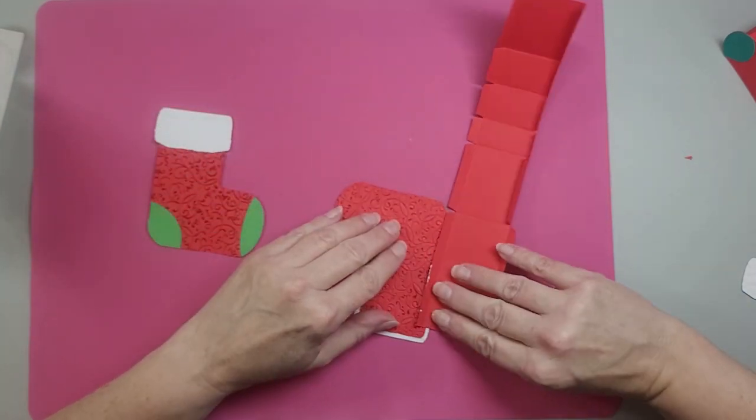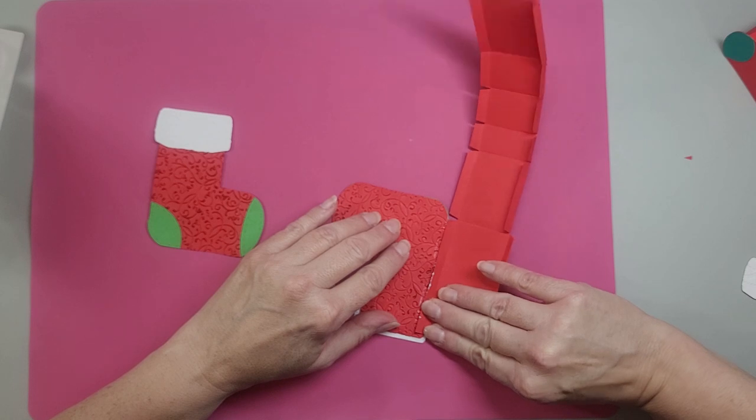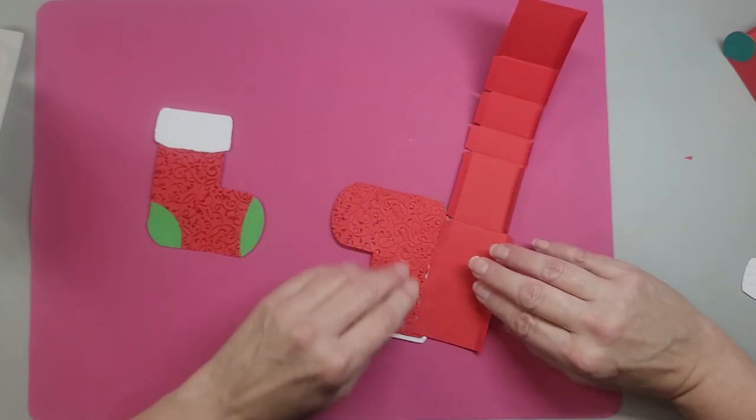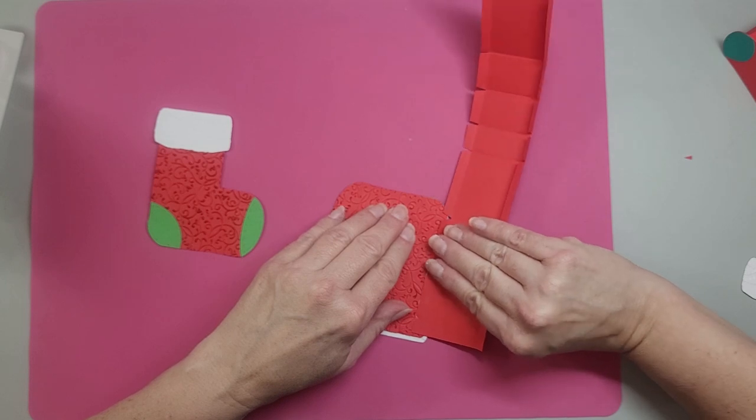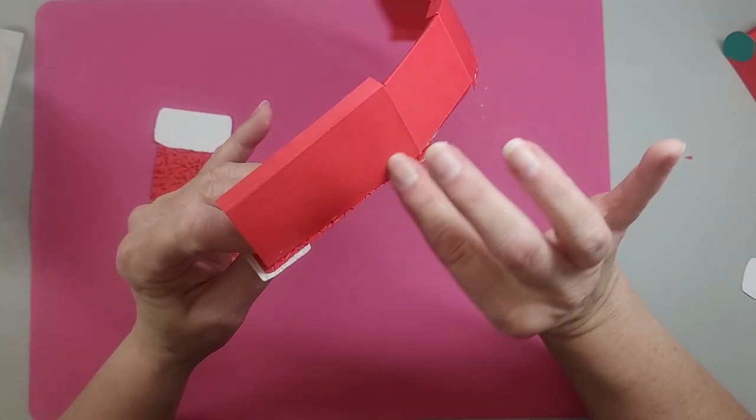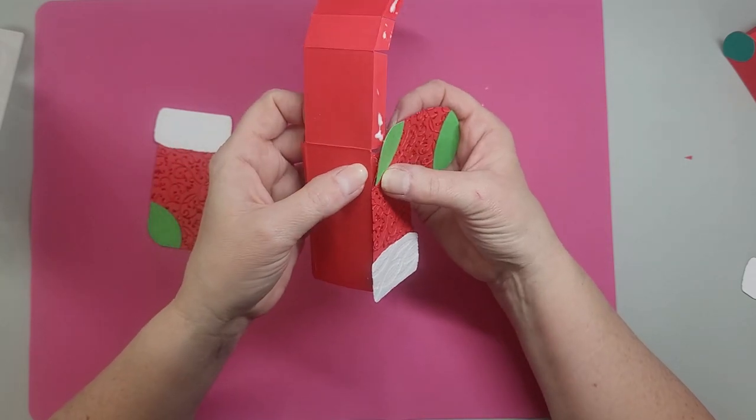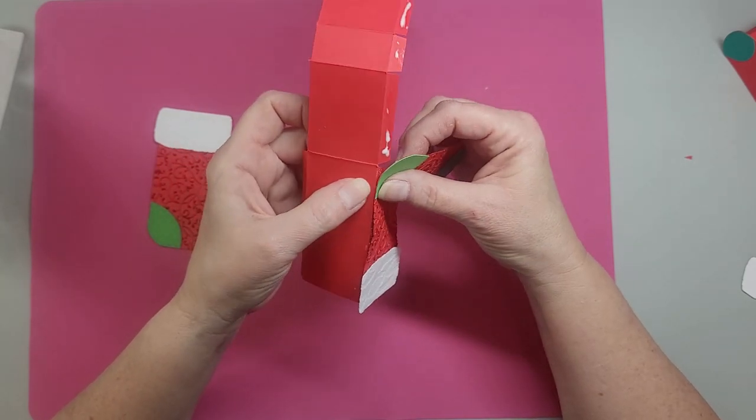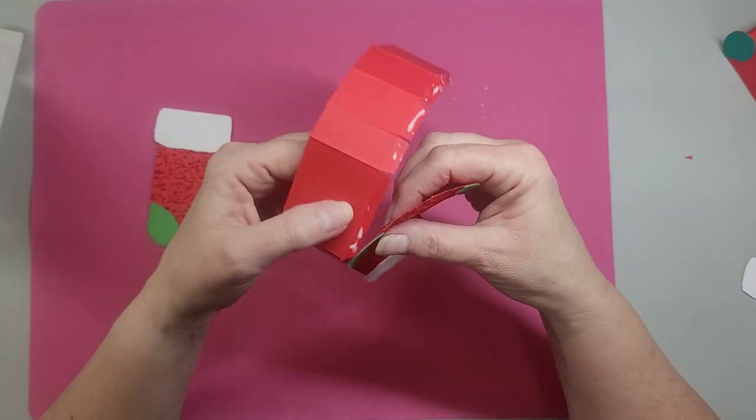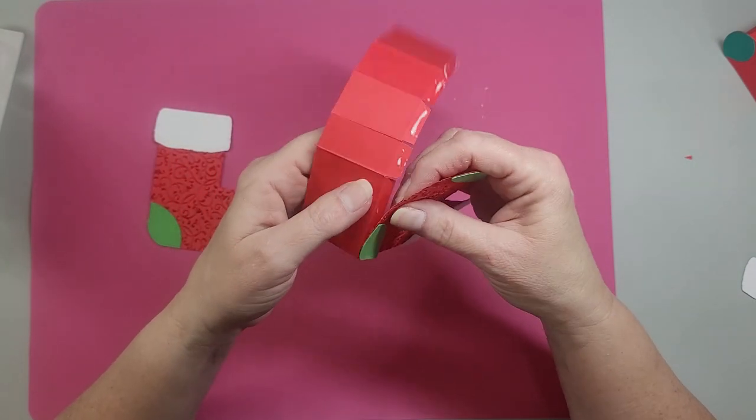Now you start here. I'm going to flip this over. So you're going to want to start this just below over here and make sure you're behind the stocking here. You want to make sure this is flush. Then this piece will come around here.